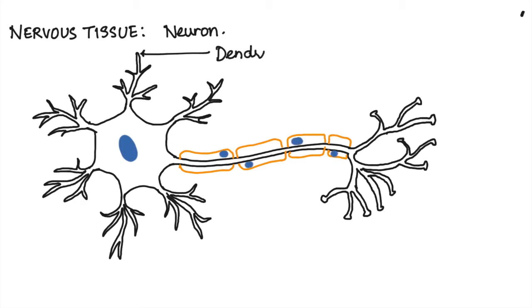There are small projections which are called dendrons, which further branch to form dendrites. These come out from the main cell body which also shows the presence of a nucleus. So this large cell body here is called the cytone or the pericarion.